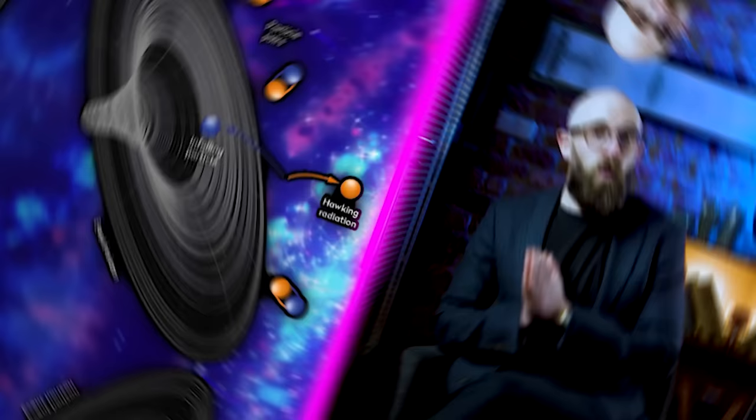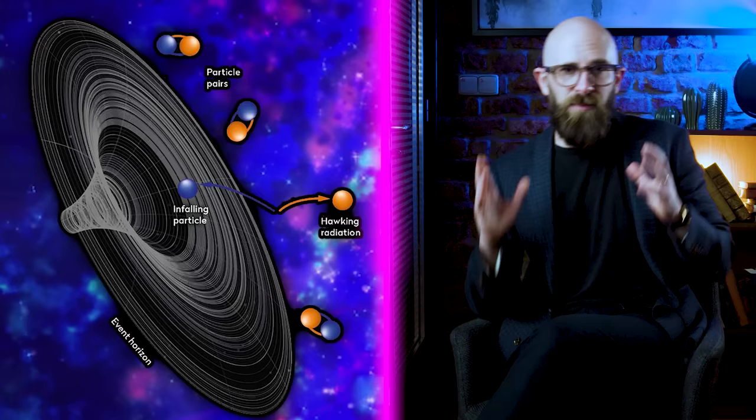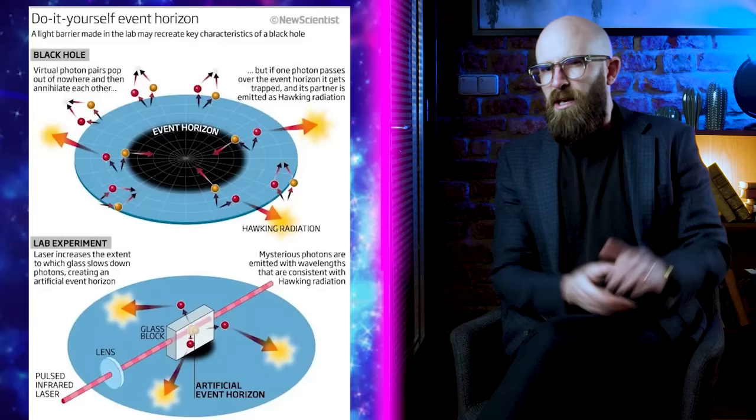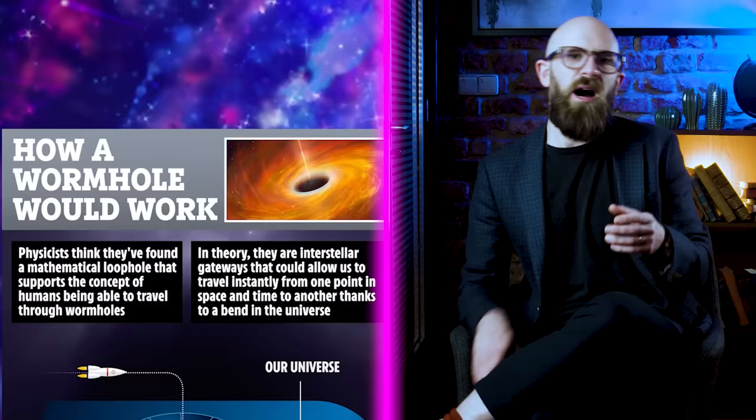Another possible issue with a traversable wormhole is Hawking radiation. Even if everything else was stable, it's speculated that wormholes would give off Hawking radiation just like black holes, causing them to shrink and eventually close. This would put a limit on their utility, like how a Star Gate could only remain open for 38 minutes.